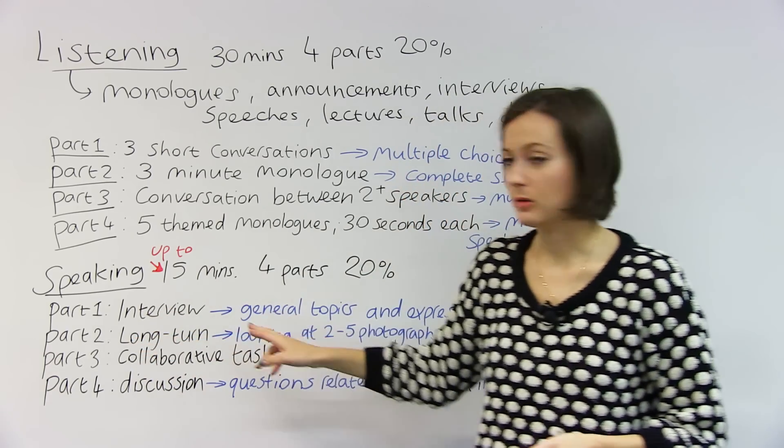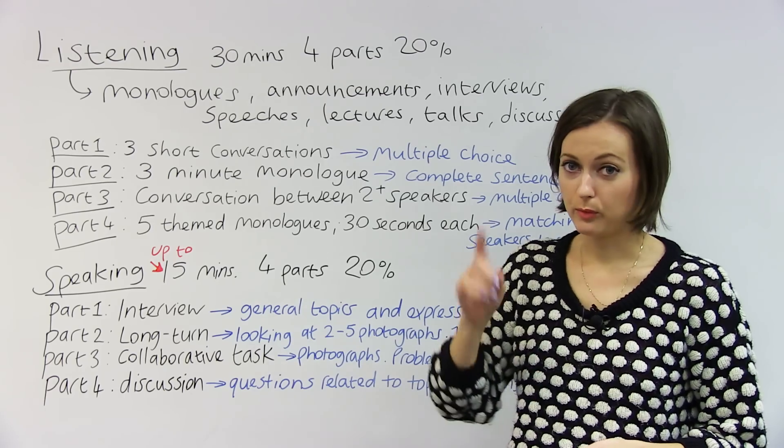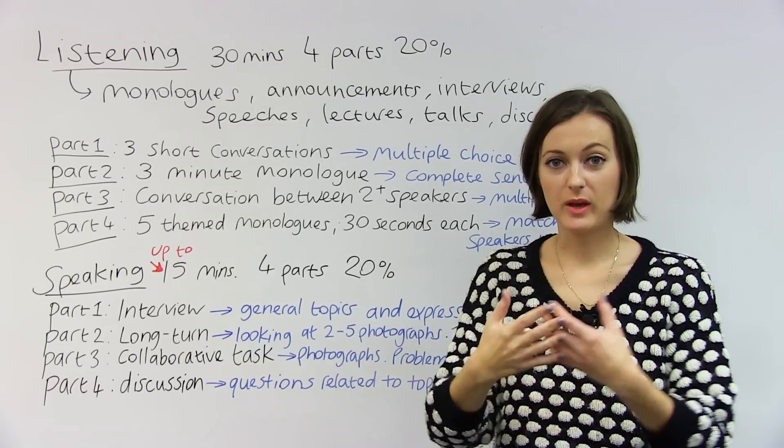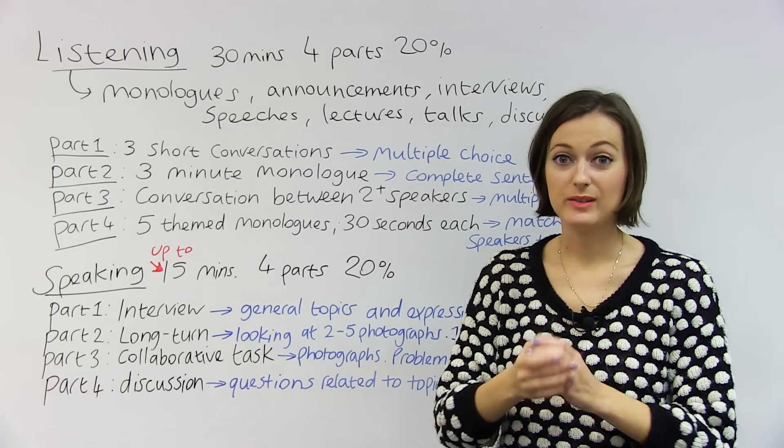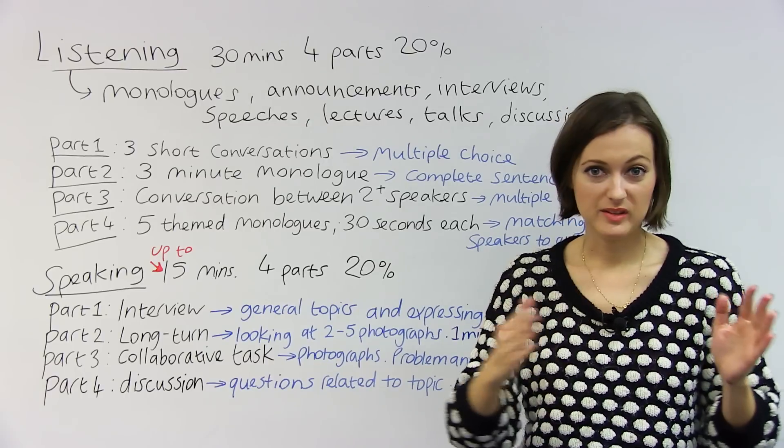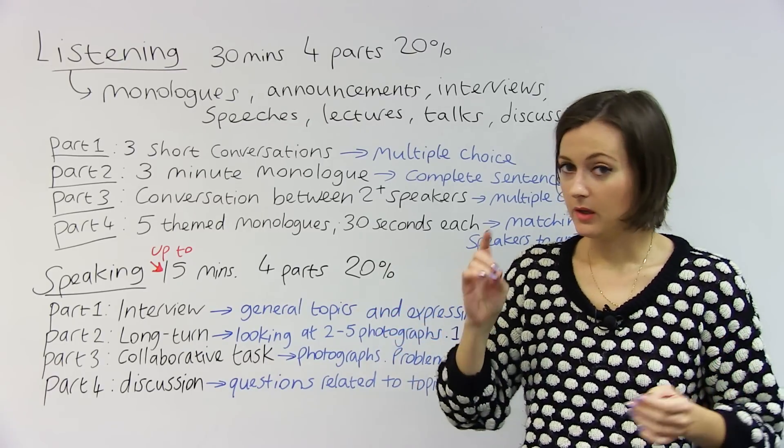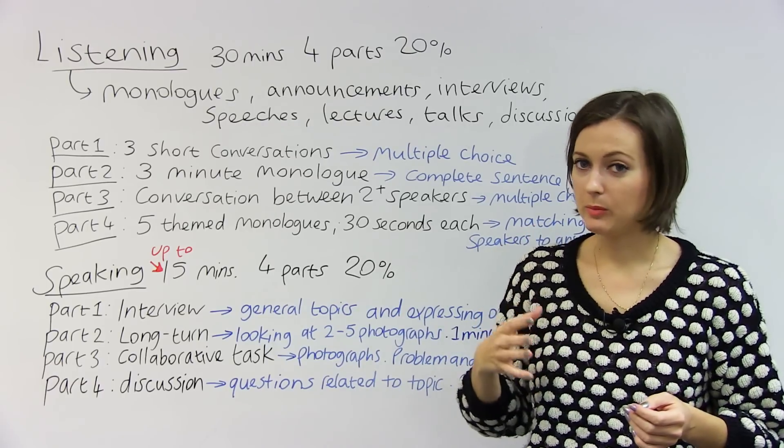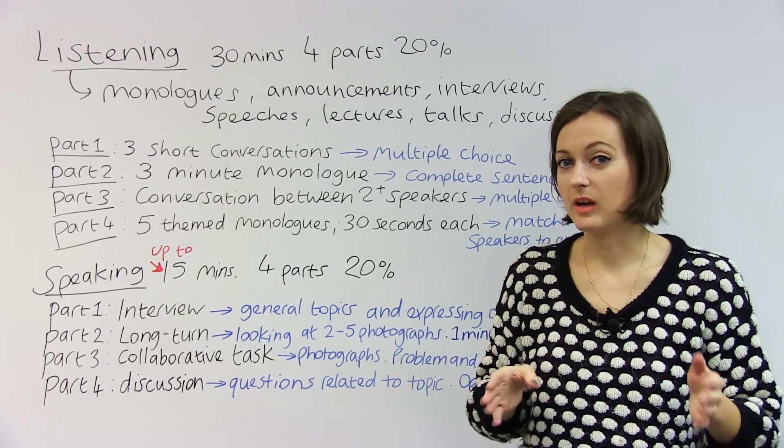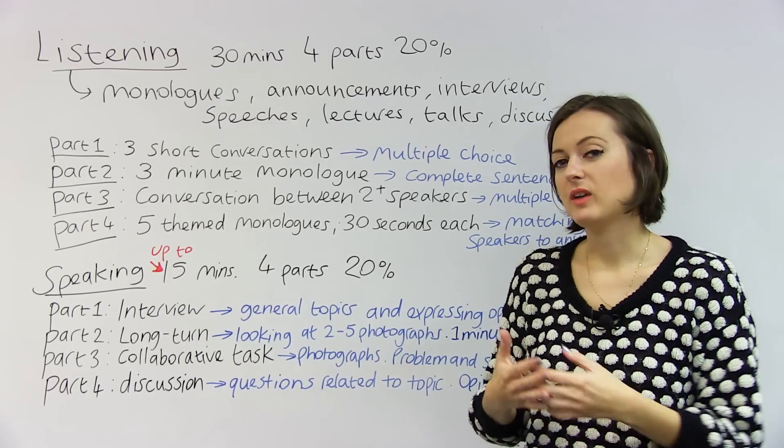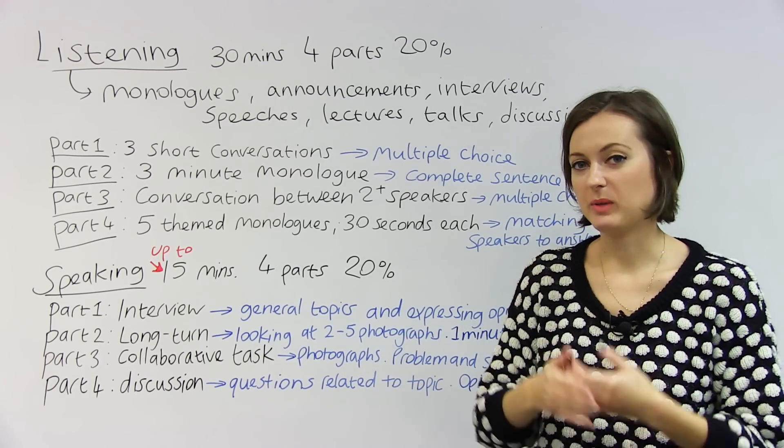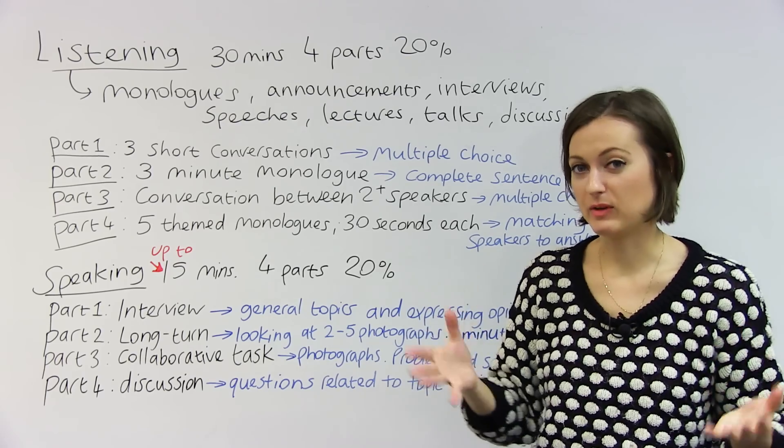Part two of the speaking test is the long turn. This is where you need to speak for one minute, one minute just by yourself. So you're given a question by the examiner, and you need to speak for one minute continuously. If you just stop speaking, there'll be silence for one minute. Sometimes people find this really hard because they're not used to just speaking by themselves for an extended period of time. One minute sounds short, but if you haven't practiced it, sometimes it's quite hard to do.